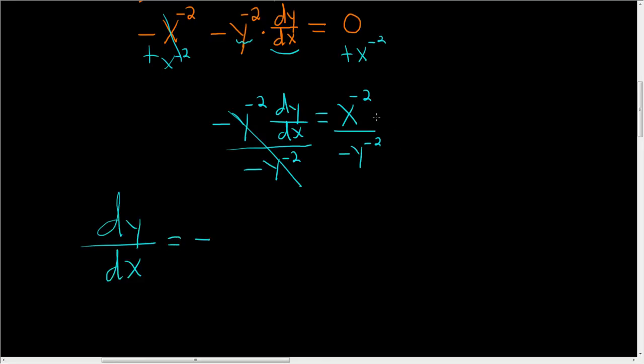We end up with dy dx equals, well we have a negative, and we can bring the y upstairs, so we get that, and move the other guy downstairs, so we get that, and that is the final answer.